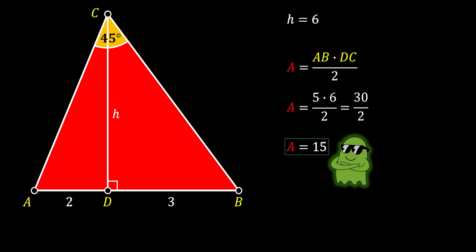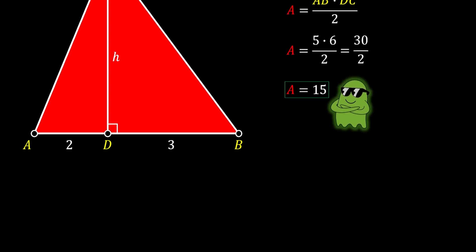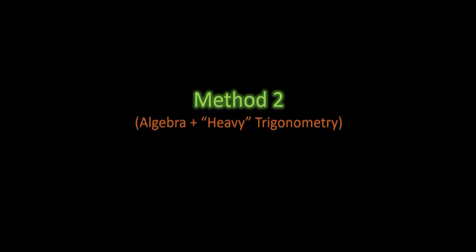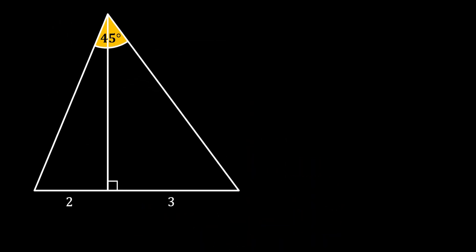Now let me show you a different method that will also use algebra, but this time with heavier trigonometry — so for all of you who love trigonometry, you're going to enjoy this. We start by again labeling the height of our triangle as H, but this time we label the bottom-left angle as alpha and the bottom-right angle as beta.